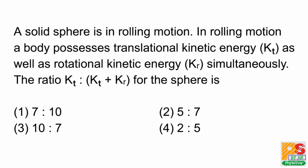Hello students, the question is: a solid sphere is in rolling motion. In rolling motion, a body possesses translational kinetic energy as well as rotational kinetic energy simultaneously. The ratio of KT to KT plus KR is, that is, translational kinetic energy divided by total kinetic energy.